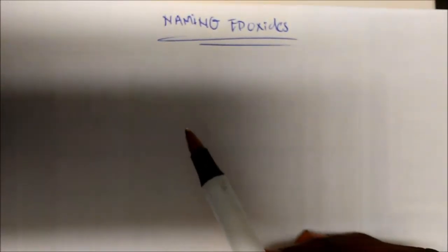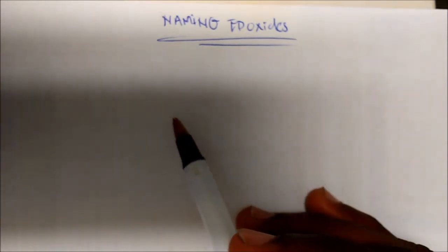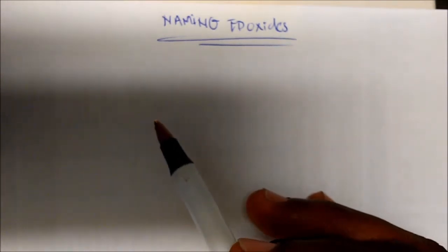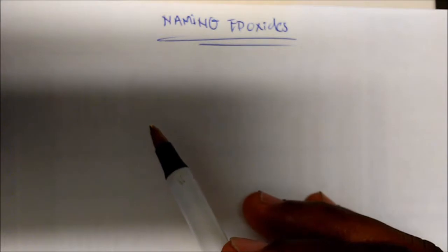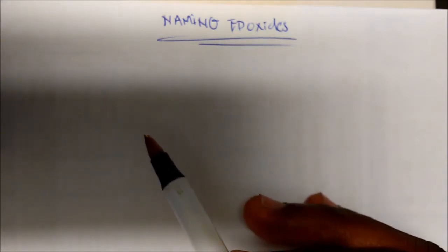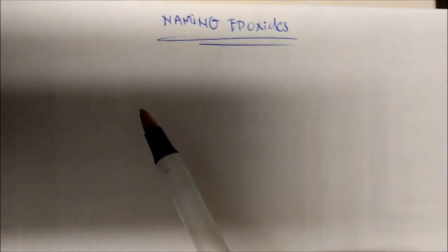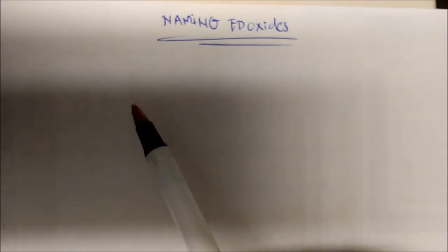In this video we're going to talk about naming epoxides. These are very reactive molecules and there are actually two ways of naming them — just as we've learned in organic chemistry, there's always an IUPAC name and then there's the common name, something you would see on the reagent bottle in the lab.